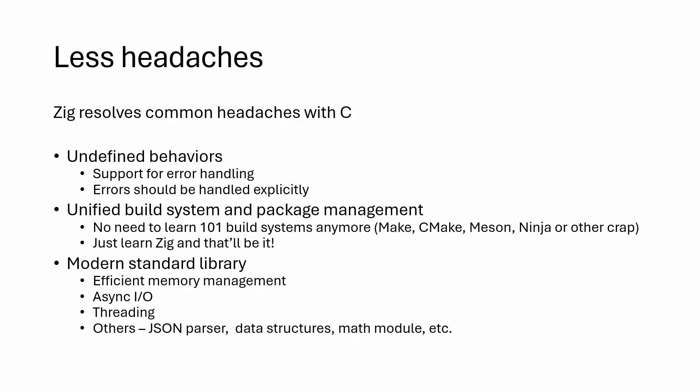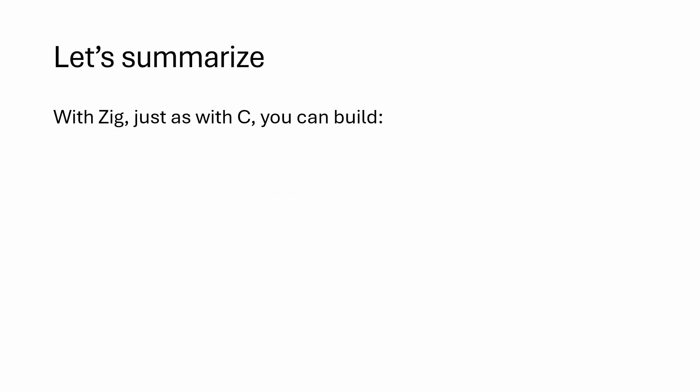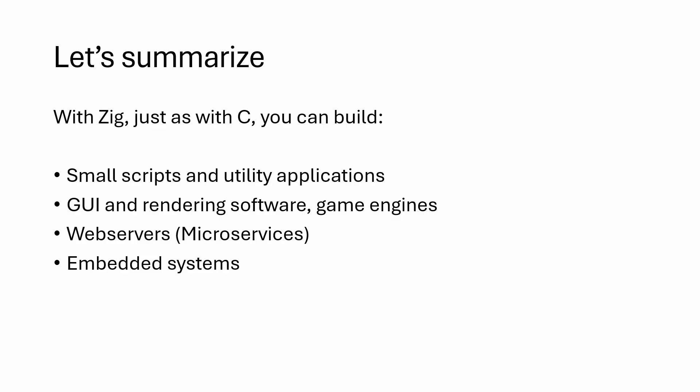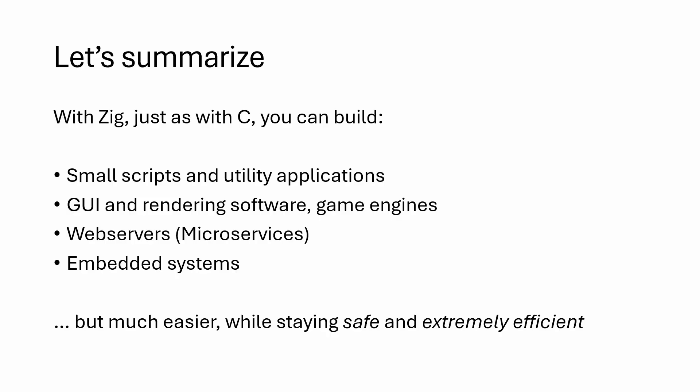And if you don't have some feature, you can simply install it using Zig's package manager. To summarize, with Zig — just as you would with C — you can build small scripts and utility applications, although languages like Python, Bash, or Ruby would be a better fit for those since they don't require overhead in terms of memory management and CPU. You can also build GUI and rendering software, game engines, mainly because those applications depend on C libraries like libgl or libvulkan, and Zig has great C interoperability. Web servers are another use case, especially with the newly added async support in the standard library as of Zig 0.15. Next, embedded systems — you initially used C for them, but now you can use Zig — and you can build pretty much any application while staying safe and extremely efficient in terms of resources.